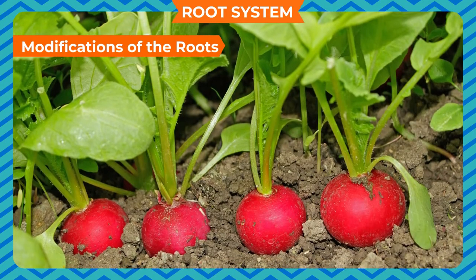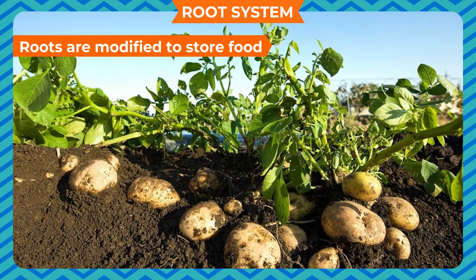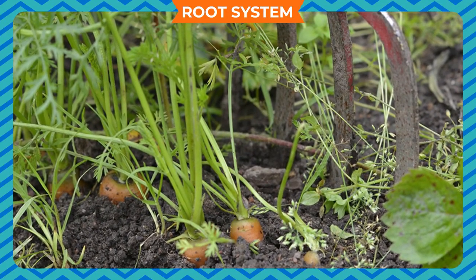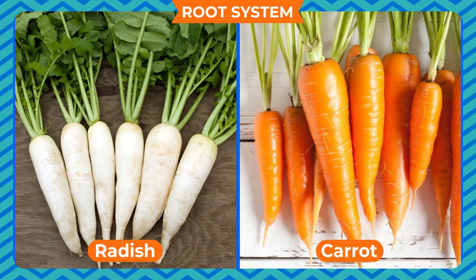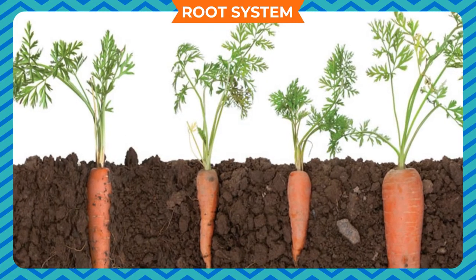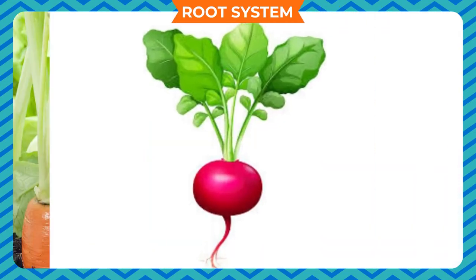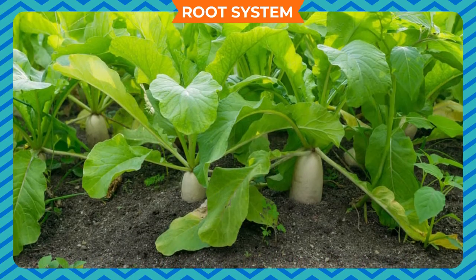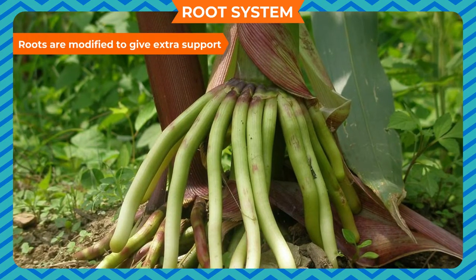Roots sometimes change their structure for performing special functions. In some plants, roots become swollen to store food instead of spreading in the soil. The roots of sweet potato, turnip, radish, and carrot belong to this category. Food made in the green leaves travels downwards and is stored in these tap roots. In any unfavorable condition, plants use this stored food. Such roots are called tuberous roots.